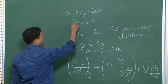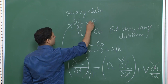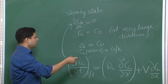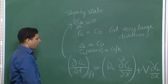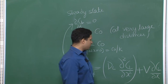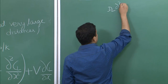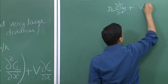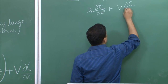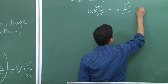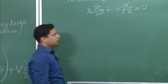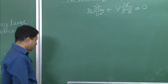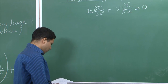We are assuming this is zero for the first case of steady state. Assuming steady state implies del C_L over del t equals zero, and therefore we are left with the simplified equation: D_L del²C_L/del x² + V del C_L/del x = 0. This is a very standard equation in differential equations and there is a well-known standard solution for it.